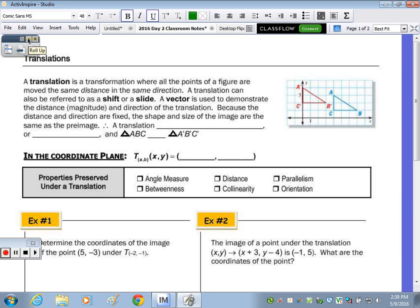At the top of the page, it says a translation is a transformation where all the points of a figure can be moved the same distance in the same direction.